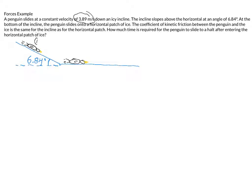So here in position one he's sliding down a slope at a constant speed. Then at some point later he hits a horizontal patch of ice. At point two he's reached the bottom and he's on a horizontal patch of ice, and then eventually at some later point in time we'll call it point three.